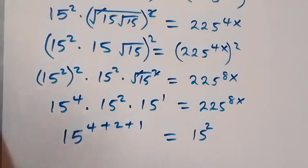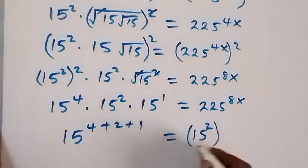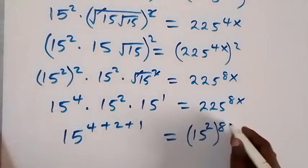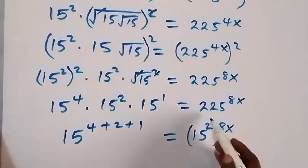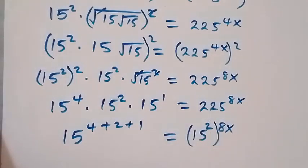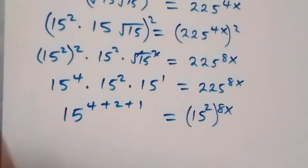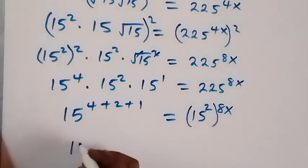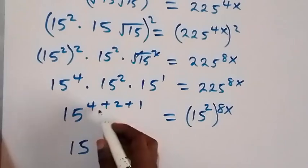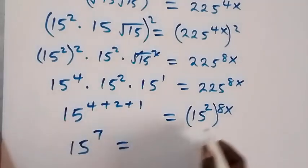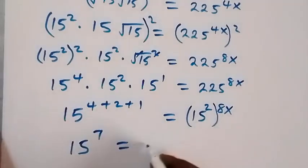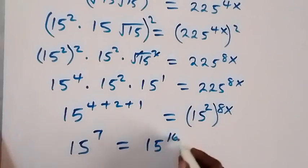Raised to the power 8x from here. Because 15 squared is 15 times 15, which is 225. From here, this is 15 raised to the power 4 plus 2 plus 1, that's 7, equals to this power multiplier, and that's 15 raised to the power 16x.